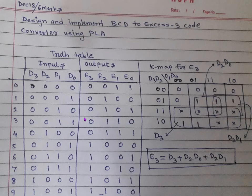The next step is to get the reduced expression for each output — E3, E2, E1, and E0 — in terms of inputs D0, D1, D2, and D3, by using the KMAP technique.